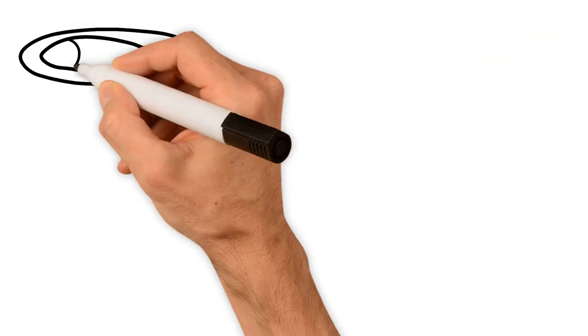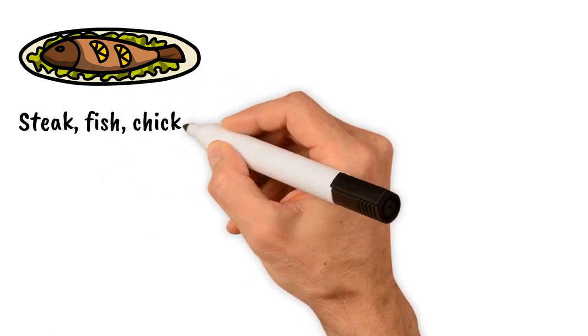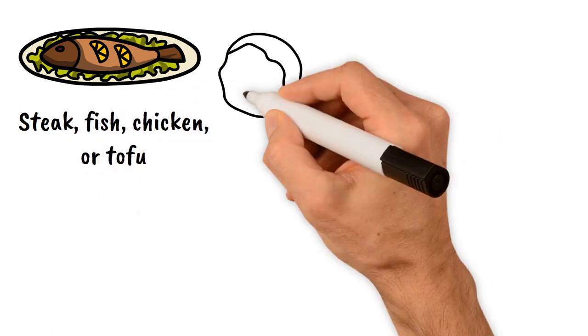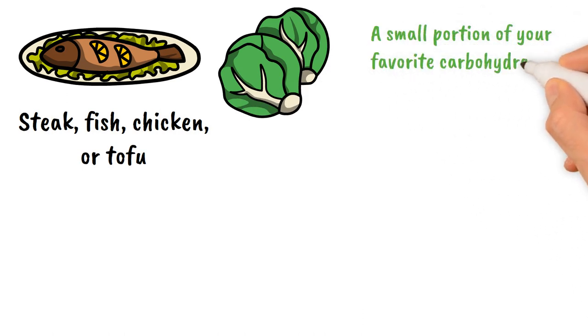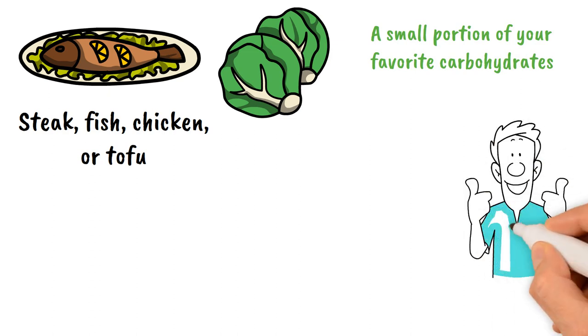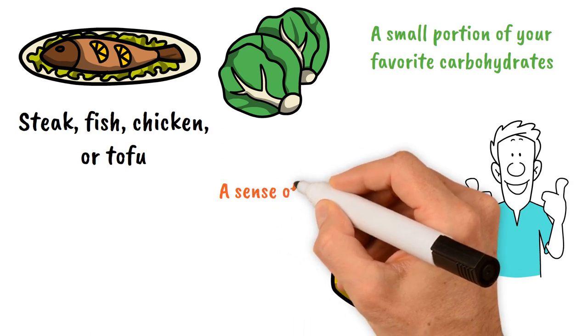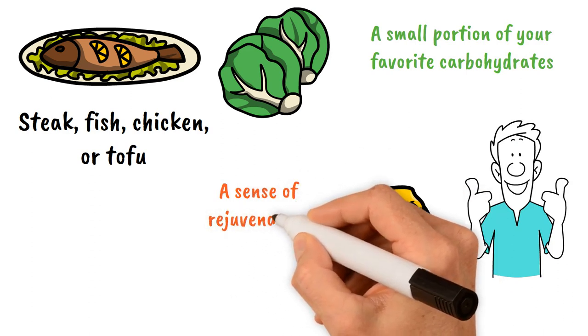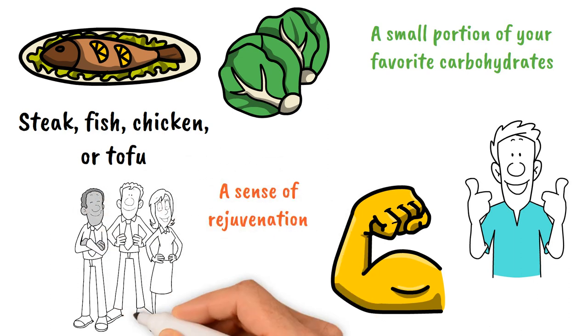For your post-workout night meal, include protein sources such as steak, fish, chicken, or tofu, paired with some vegetables and a small portion of your favorite carbohydrates. By adopting this approach, observe how your body responds in the morning. You'll likely experience improved energy levels and a sense of rejuvenation. Your body will thank you for making this positive change in your nighttime eating habits.